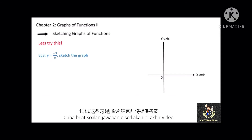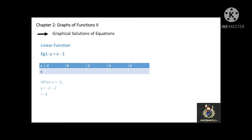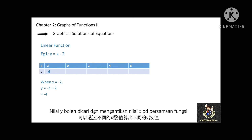Now let's move to graphical solution of equations. This subtopic involves being given an equation, maybe linear or quadratic, and values of x to find corresponding values of y. See example 1: y = x − 2. When x = −2, y = −4; when x = 0, y = −2; when x = 2, y = 0; when x = 4, y = 2; and when x = 6, y = 4. If you plot these x and y coordinates accordingly, you will have a linear graph.